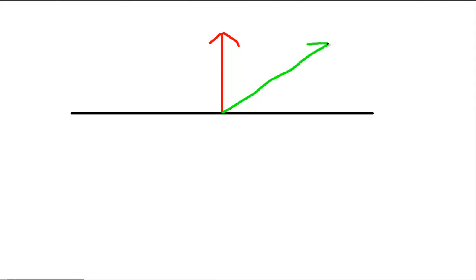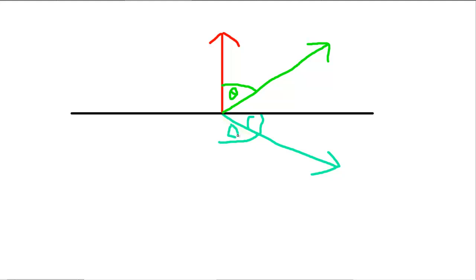So if I have a direction vector, it's a lot easier to demonstrate if I have the direction pointing away from the plane first rather than towards it. I can calculate this angle using the dot product. I'm going to draw the reflection — we know that angle is going to be the same as this angle here.